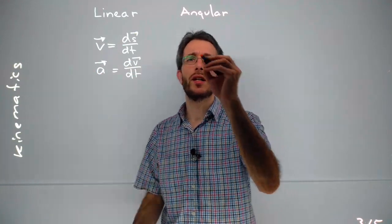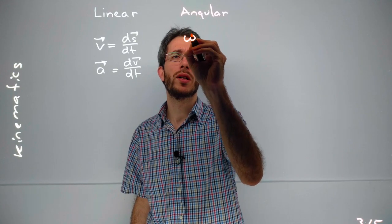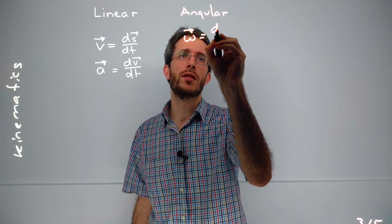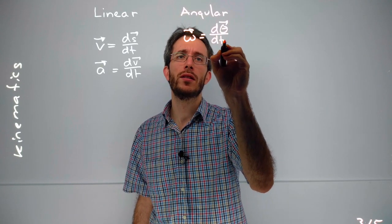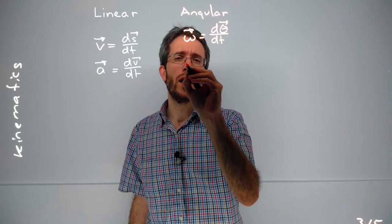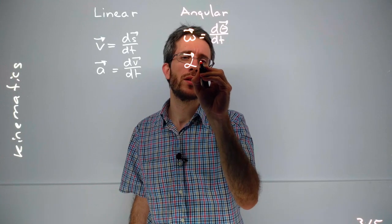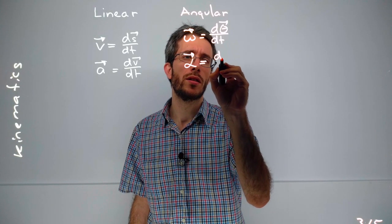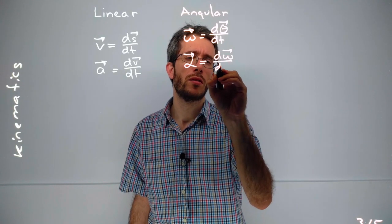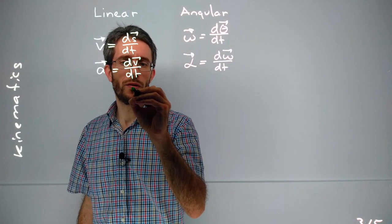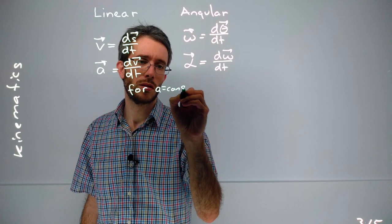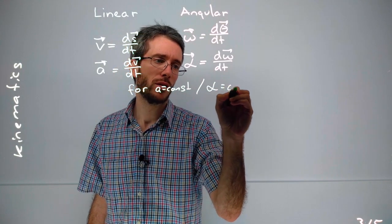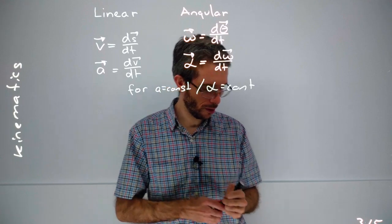Now for the angular case, this would mean that we have omega is d theta/dt, the derivation of the angle over time, and angular acceleration is d omega over dt. And then in both cases, we have for constant a, or alpha is constant, we have five equations.